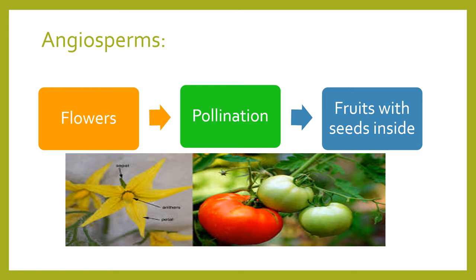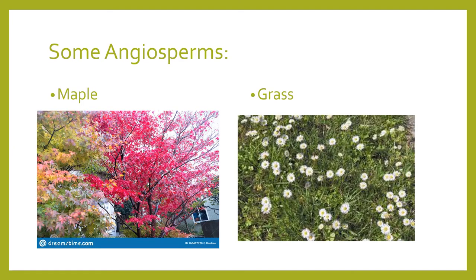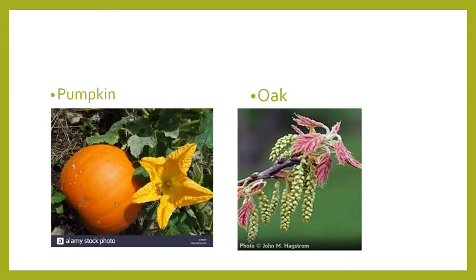There are many many types of angiosperms — anything you eat, whether lettuce, cucumbers, tomatoes, avocados, or papaya, is an angiosperm. A common mistake students make is not recognizing that grass is actually a flowering plant — it's an angiosperm. The maple tree and the oak tree are also angiosperms. Pumpkin is an angiosperm — you can see here the flower becoming a fruit because of pollination and fertilization.